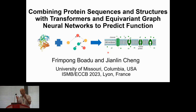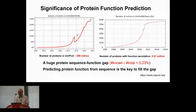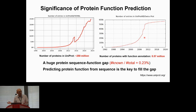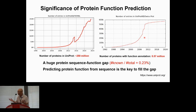Protein function prediction is very important because we still don't know the function of most proteins. The number of proteins in UniProt has increased exponentially, but the number with manual annotation has only increased slowly. Right now we have about 250 million proteins in UniProt, but only about 0.57 million with manual annotation — a ratio of 0.23%. So there's a huge sequence-function gap. Experimental techniques cannot address all these proteins because they are too expensive and time consuming, so computational prediction is key.